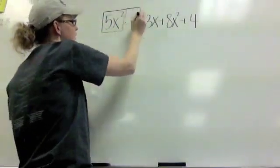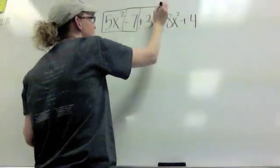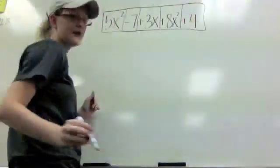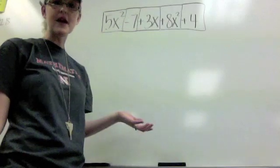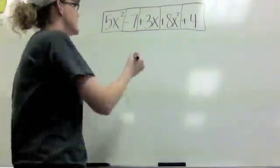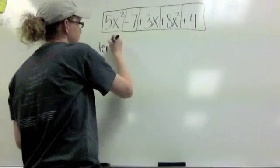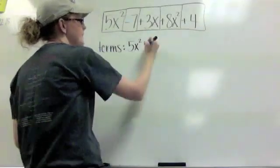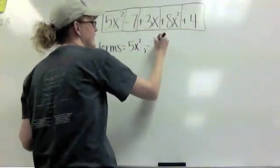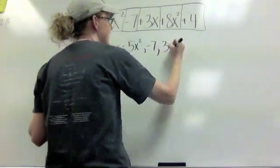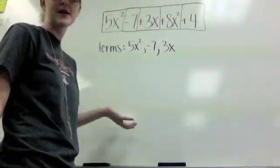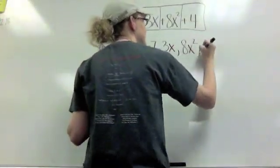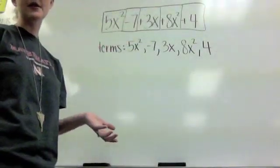And then I would continue on past the 7, past the 3x, past the 8x squared, finally around the 4. The things in the boxes, those are my terms. So if I look at my terms and I want to jot those down, my terms would be 5x squared, negative 7, 3x, we don't need to put the plus because we know it's positive, 8x squared, and 4. Those are my terms.